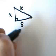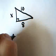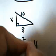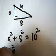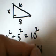Now, if I apply the Pythagorean theorem to this right triangle, X squared plus 8 squared equals 10 squared. X squared plus 64 equals 100. X squared is equal to 36.